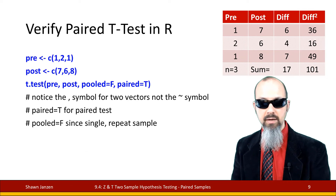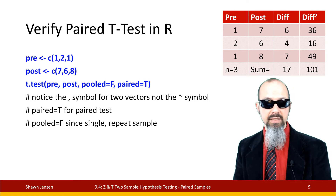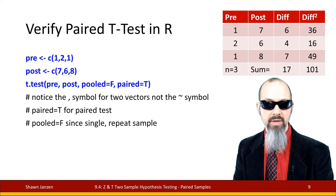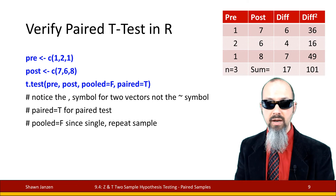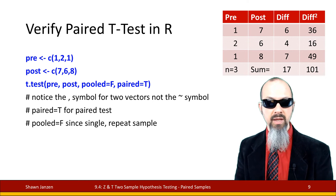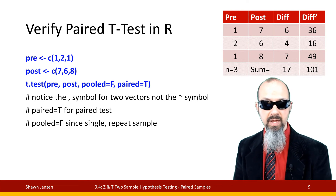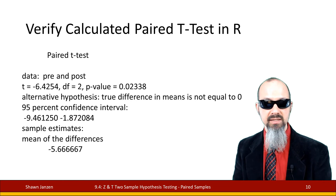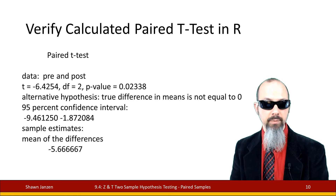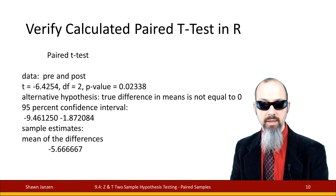I can verify the results in R using t.test with two separate vectors — pre comma post — pooled equals false because we're not in the independent-samples version where we pool the standard error, and paired equals true to tell R this is a paired-sample test. The results give a t-score of negative 6.4, degrees of freedom of 2, and a p-value of approximately 0.023. The t-statistic is negative because the pre value is lower than the post value; flipping the order would give a positive t-score, but the relationship holds. R also returns the 95% confidence interval and mean group difference.